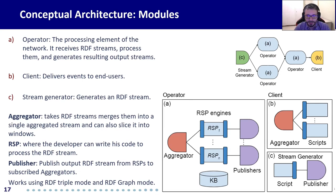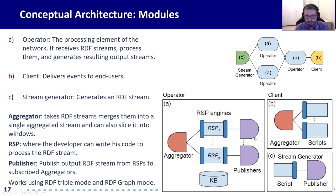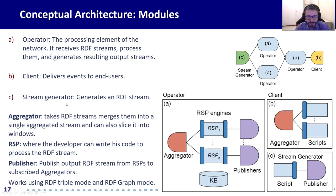Our conceptual architecture has three main modules. The first module is the operator module, which is the processing element of the network. It receives an RDF stream and outputs generated resulting streams. The second module is the client module, which delivers the events to end users. And the third module is the stream generator, which generates new RDF streams and publishes them into the infrastructure.